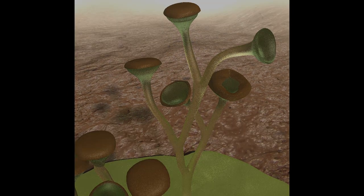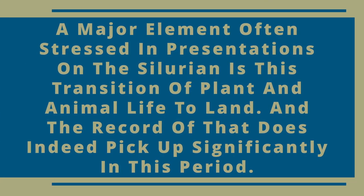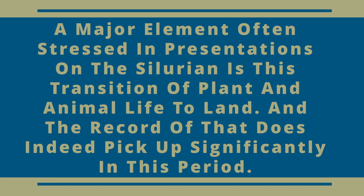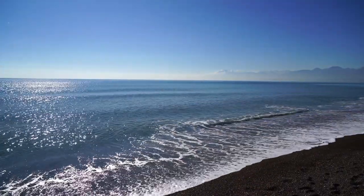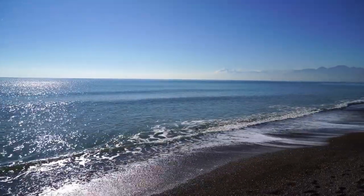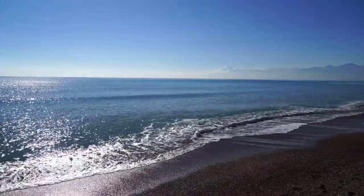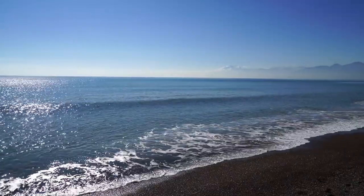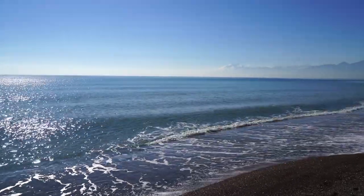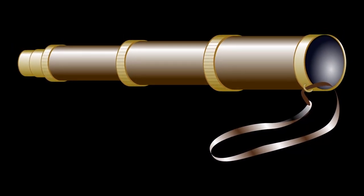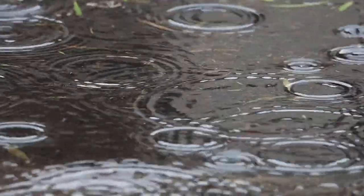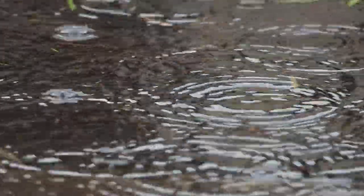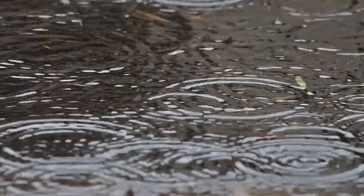Much of that life evolved during this period, and maybe some of the life initially moved to land during this period. A major element often stressed in presentations on the Silurian is this transition of plant and animal life to land, and the record of that does indeed pick up significantly in this period. Sometimes neglected in this narrative, however, is that microbial life had been on land for a very long time at this point, and the basal plants also appear to have preceded this period. As best I'm aware, all life during this period existed near water and in moist environments.